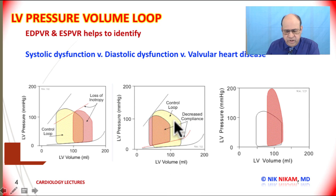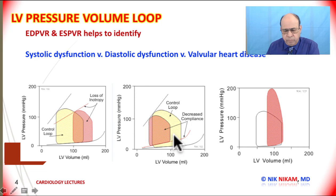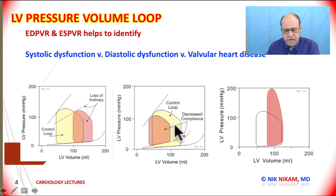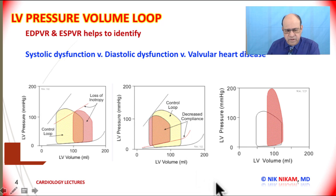Another important thing to note is that the area covered by this loop represents the left ventricular stroke work — that is, the amount of work the heart has to do in order to maintain a single cardiac cycle.